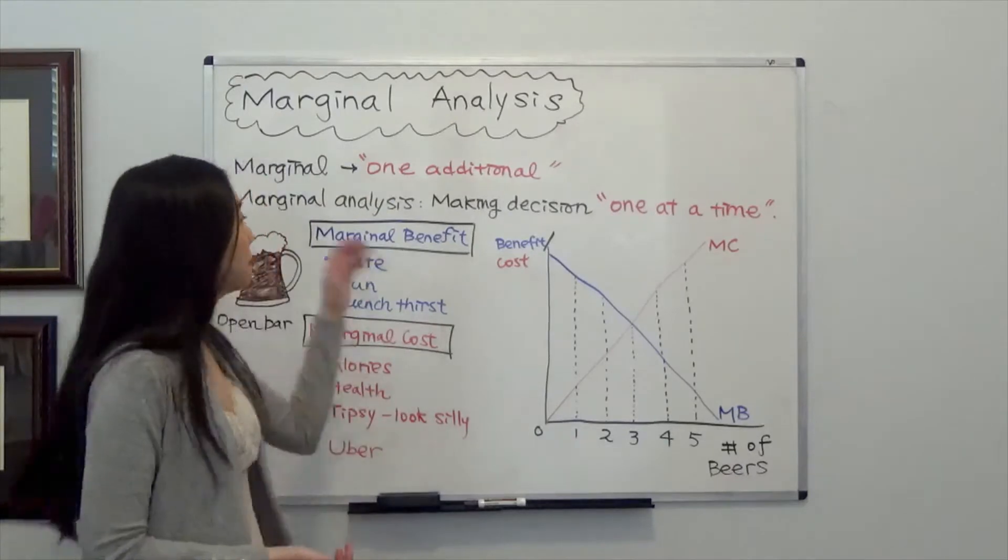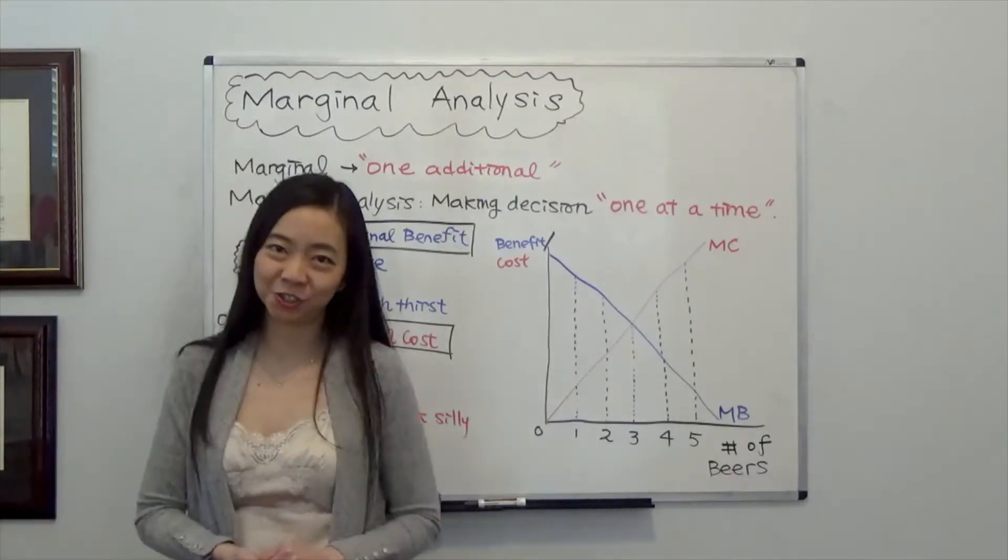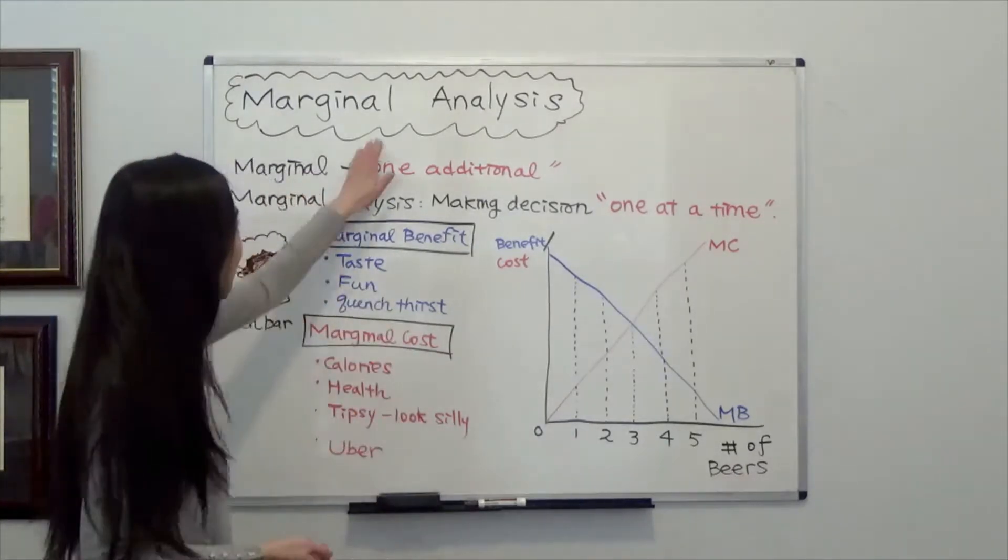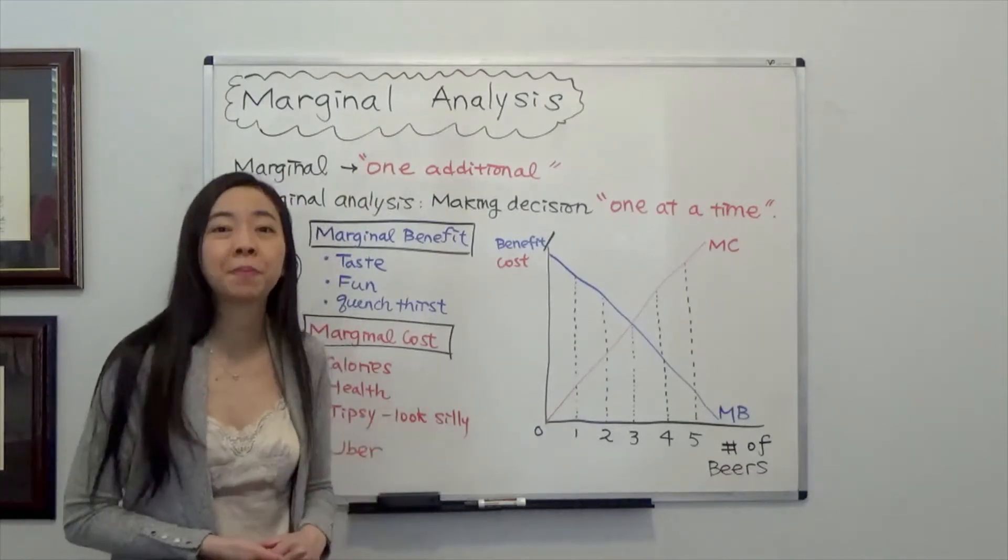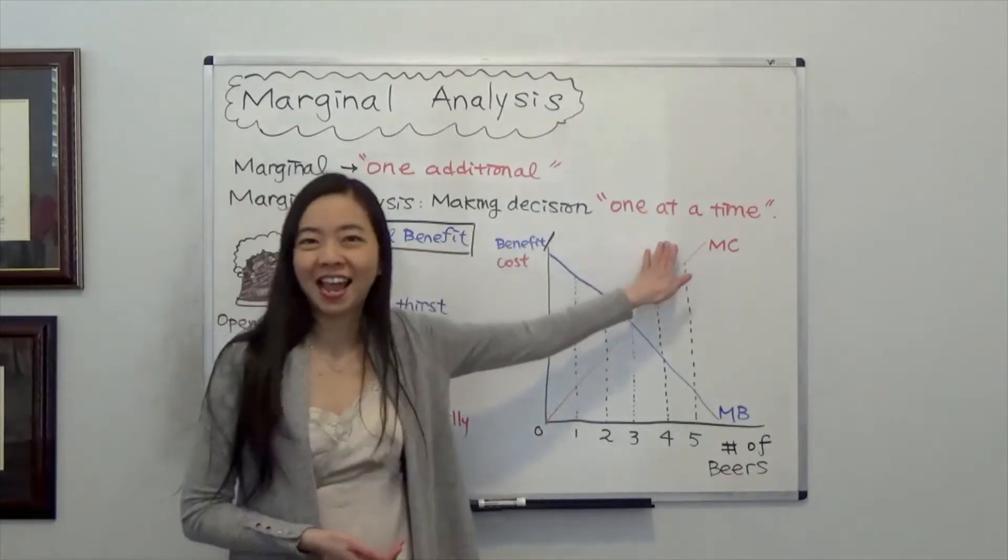And using plain English, marginal means one additional. And marginal analysis just means that when you're making a decision, you make decisions one at a time.